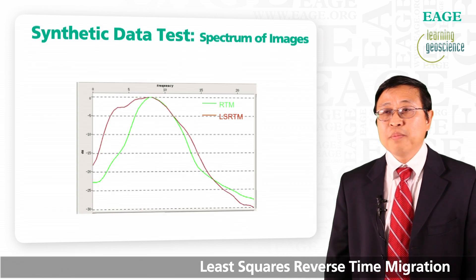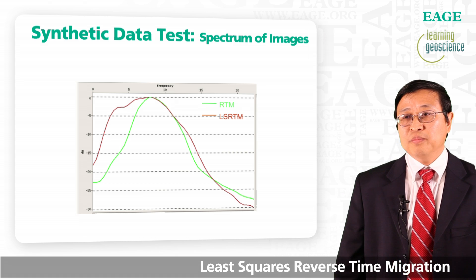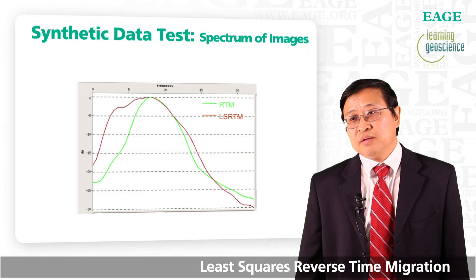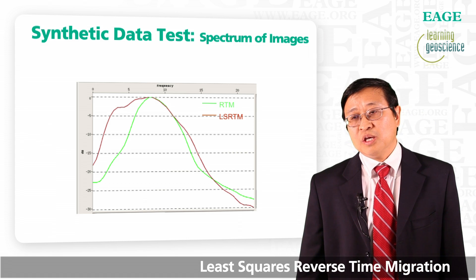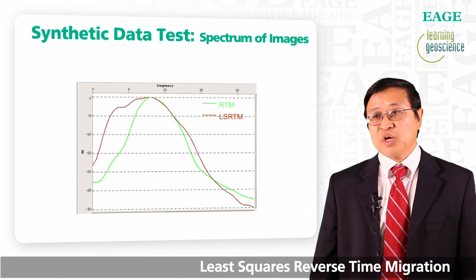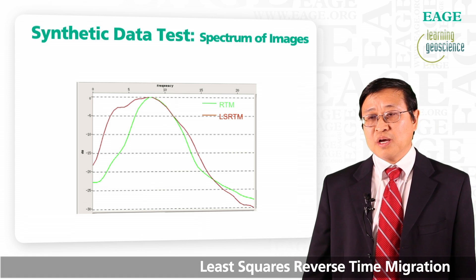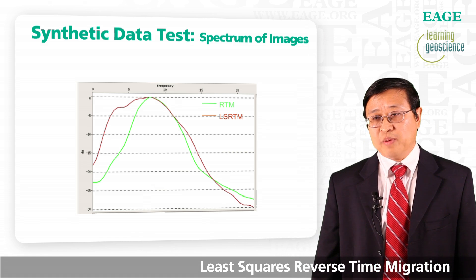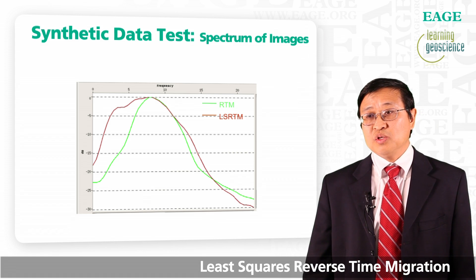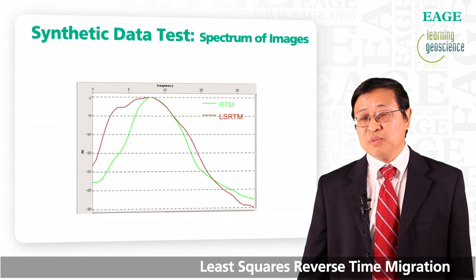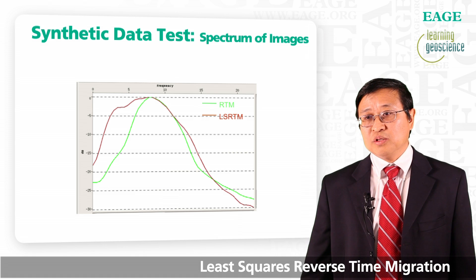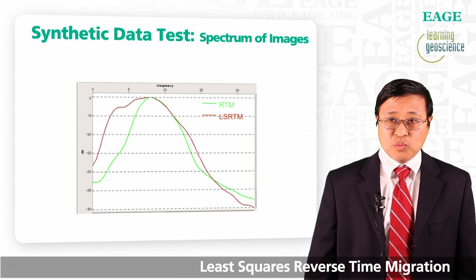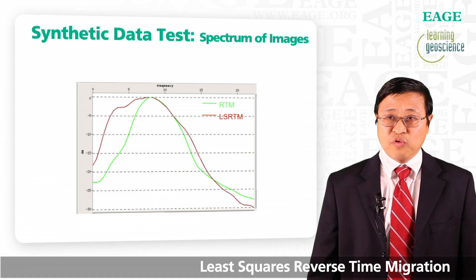Let's compare the spectrum. The green curve is the RTM spectrum, and the red curve is the least squares RTM spectrum. You can see least squares RTM gives you a broader spectrum, especially towards the low frequency.